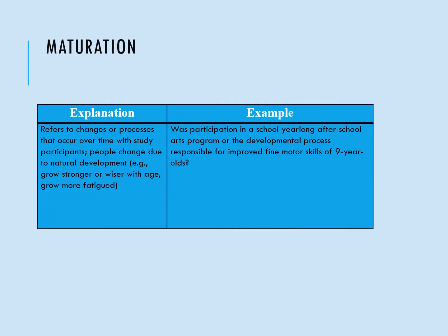The first threat is maturation. This refers to changes or processes that occur over time with study participants. As they get older, they may get smarter or wiser, or they may grow fatigued more quickly. A good example is participation in a year-long afterschool arts program, or the development processes responsible for improved fine motor skills of nine-year-olds. Was it that they just got older, or was it that they participated in a certain class that resulted in the outcome?